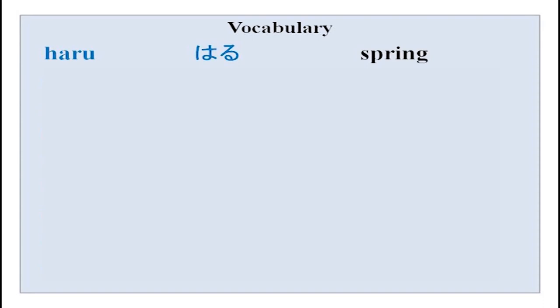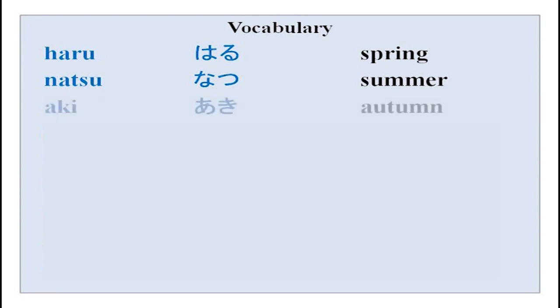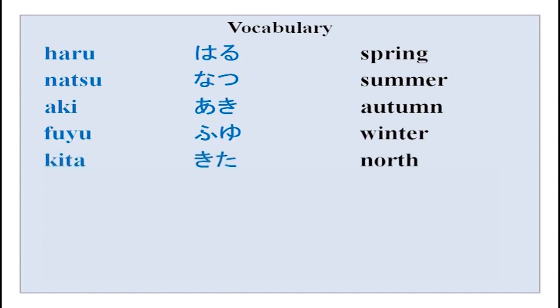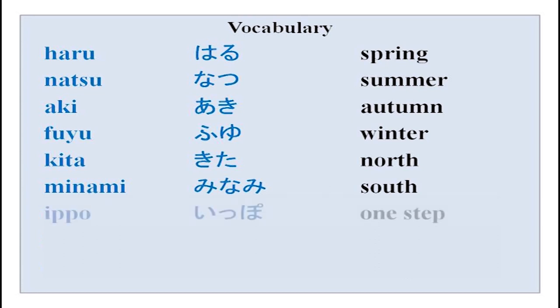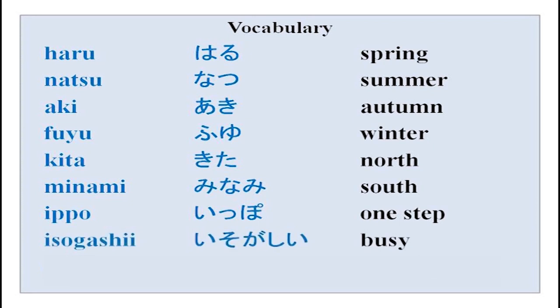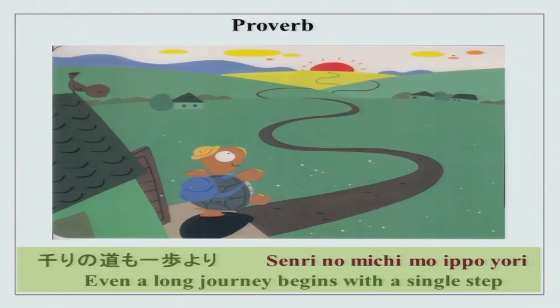Now you have vocabulary from our lesson. Haru (spring), natsu (summer), aki (autumn), fuyu (winter), kita (north), minami (south), ippo (one step), isogashii (busy), urusai (noisy). You can repeat after me and practice at home.